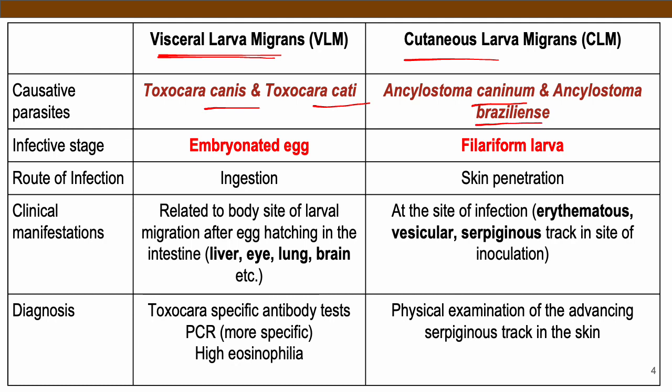In terms of their infective stage, for VLM — specifically your Toxocara species — the infective stage is the embryonated egg, while for cutaneous larva migrans it is the filariform larva.